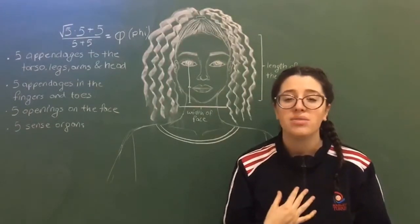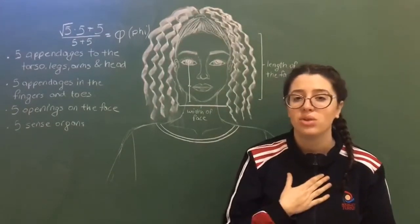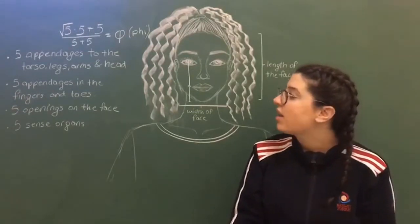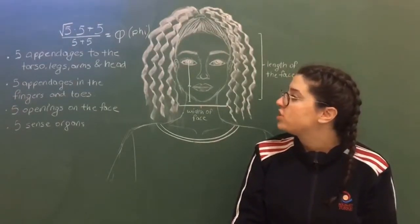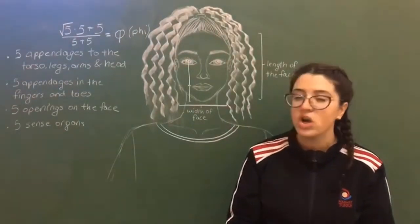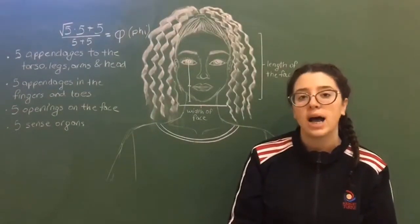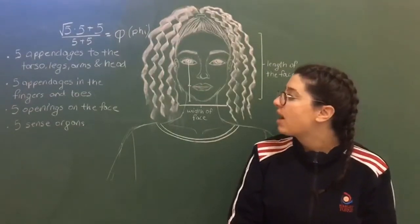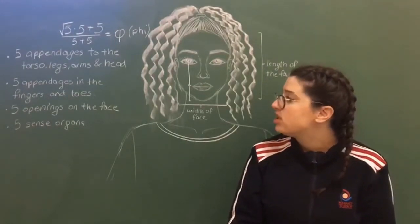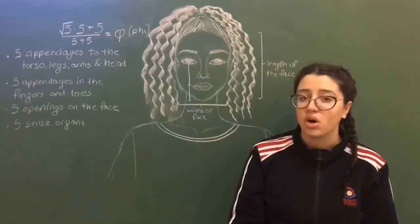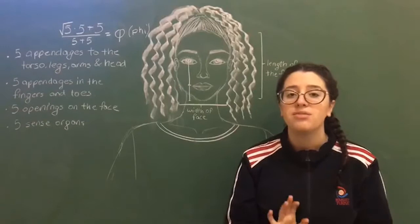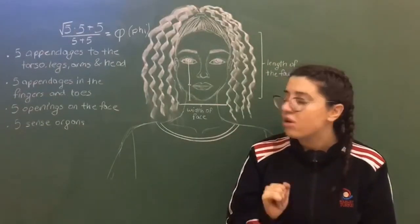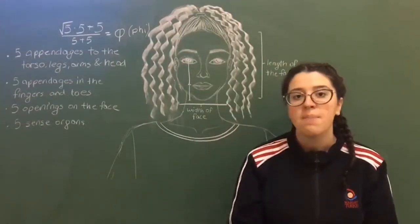The number 5 is related to lots of things in our body, as we have 5 appendages to the torso: legs, arms, and head. We also have 5 appendages in the fingernails, 5 sense organs, and 5 openings on the face.